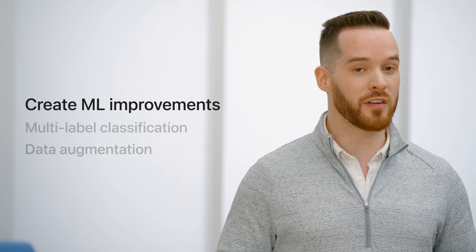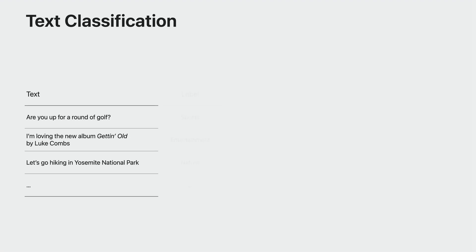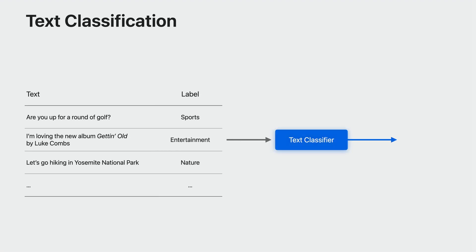Let's get started with text classification improvements. A text classifier is a machine learning task designed to recognize patterns in natural language text. To train such a model, all you need to do is provide it with a table of text and label pairs. In this example, I have sports, entertainment, and nature labels.